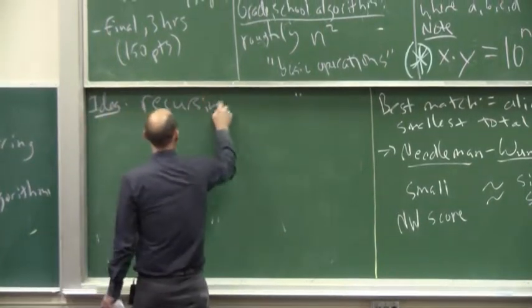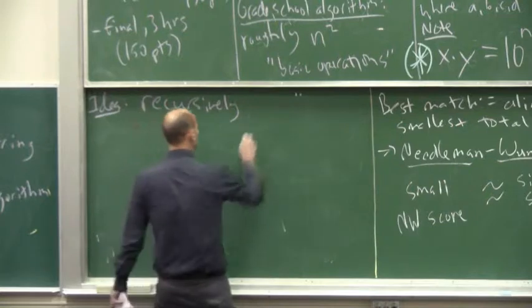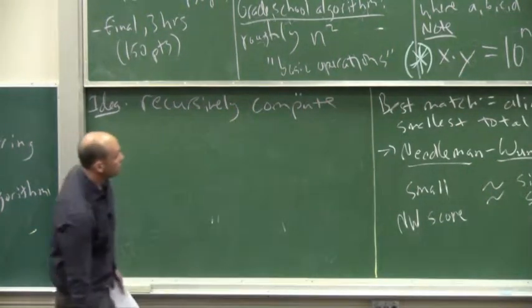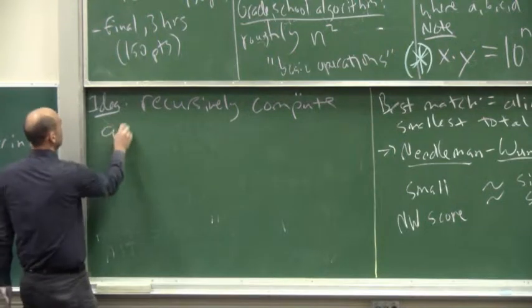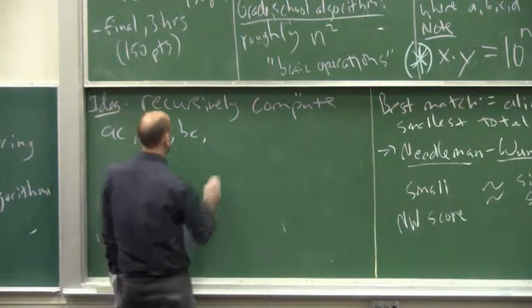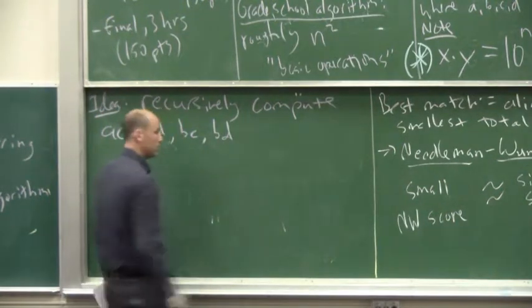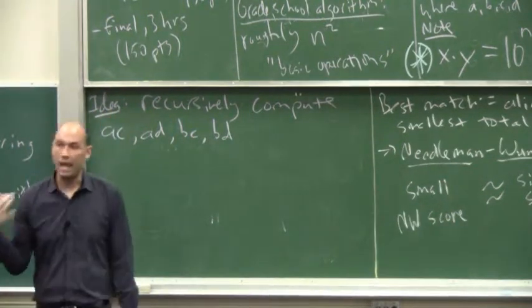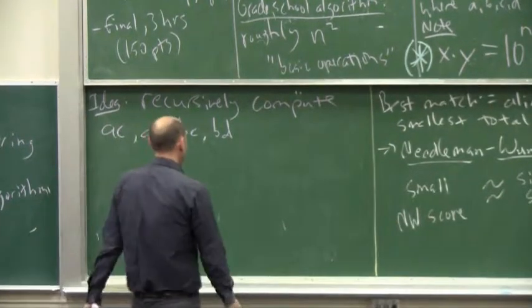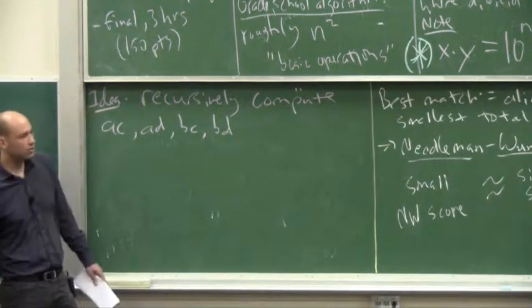So, the idea is to recursively compute whatever we need. So, what do we need to know in star? Well, we need to know AC. We need to know AD. BC. And BD. So, each of that is a multiplication of two n over two-digit numbers, smaller subproblems.